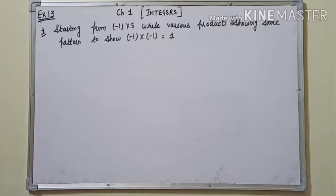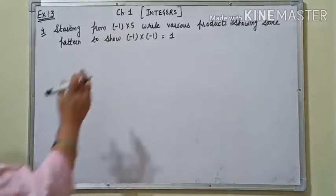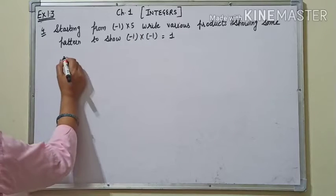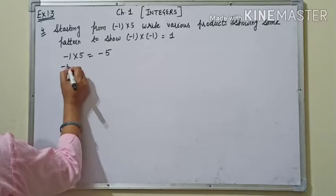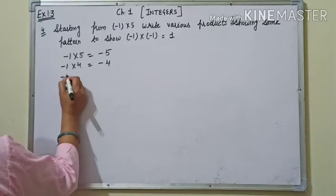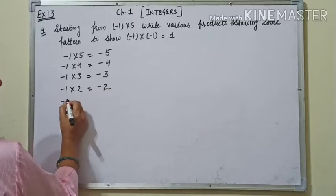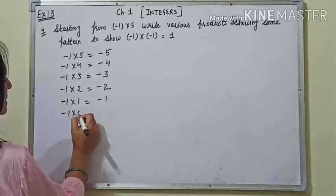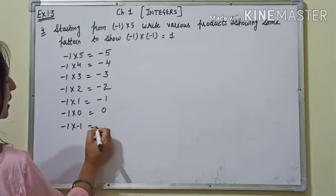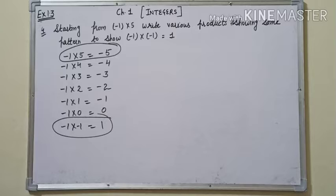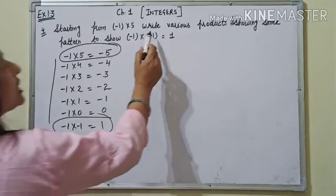Question 4: Starting from (-1) × 5, write various products showing a pattern to show (-1) × (-1) = 1. So: (-1) × 5 = -5; (-1) × 4 = -4; (-1) × 3 = -3; (-1) × 2 = -2; (-1) × 1 = -1; (-1) × 0 = 0; (-1) × (-1) = 1.